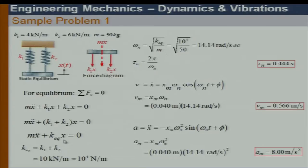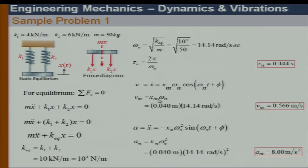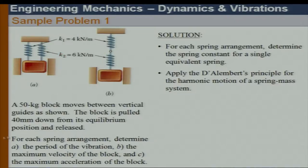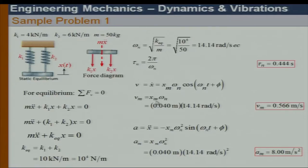Once I get K_equivalent, I can find the natural circular frequency of vibration as sqrt(K_eq/m). Then I can get the time period T = 2π/omega, the maximum velocity as x_m times omega_n, and the maximum acceleration as x_m times omega_n squared. Remember the displacement given was 40 mm.